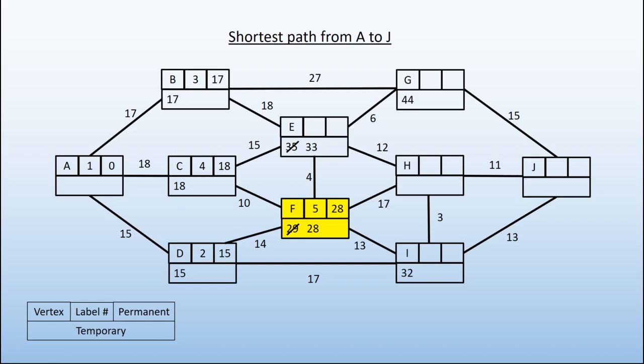F is connected to E, and we can replace the 33 with 32. Again, what we're saying is we know that we can get from A to E in 32.